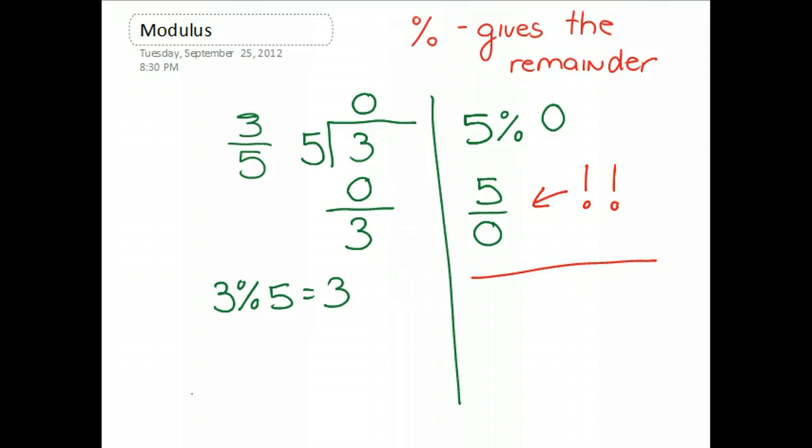So, if I consider 0 mod 5, to solve this, I need to take 0 and divide it by 5. Well, 5 goes into 0 zero times. So, 0 times 5 is 0, and the remainder is 0. So, therefore, 0 mod 5 is simply 0.